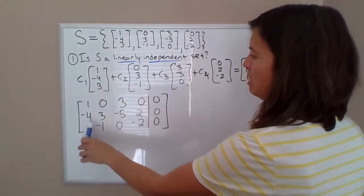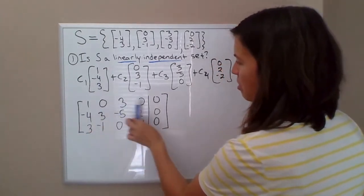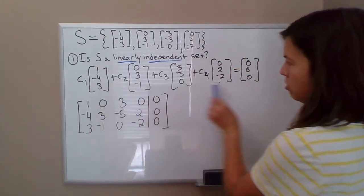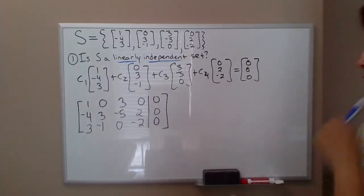So the reason you set it up this way, take the vectors, make them columns of a matrix and row reduce, is because you're actually solving this equation. You're determining if there's any non-trivial solutions to that equation.